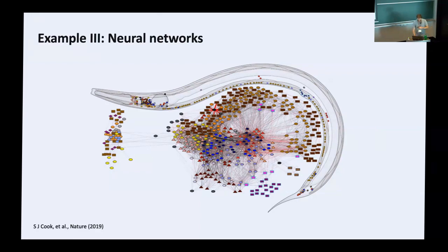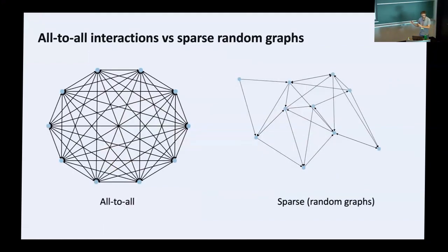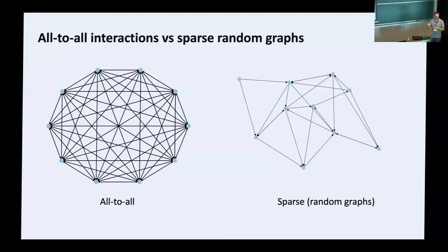These are some examples of complex systems that can be modeled in terms of graphs. From the theoretical side, most studies have concentrated on all-to-all interactions — graphs in which every node interacts with every other node. This is considerably simpler to study because laws of large numbers and the central limit theorem apply, simplifying the analysis considerably. Much research is known about such systems. Unfortunately, much less is known about complex systems defined on sparse random graphs, because these systems are highly heterogeneous.